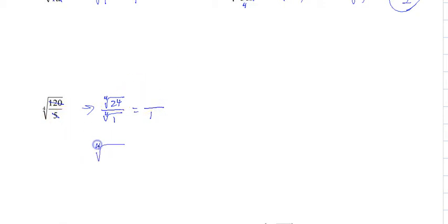Now the fourth root of 24, let's break it down, 3 and 8, 2 and 4, 2 and 2. And we need 4 in order to take anything out. And since we don't have 4 of anything, we know we're done. And that's it.